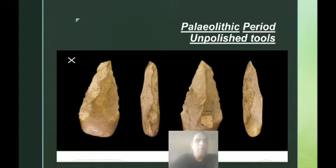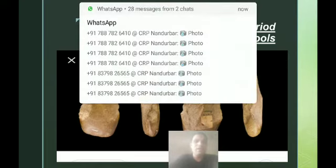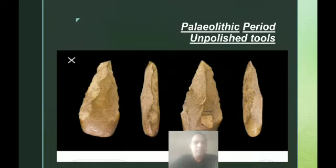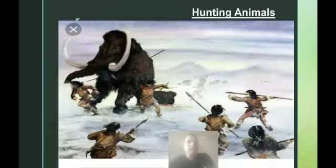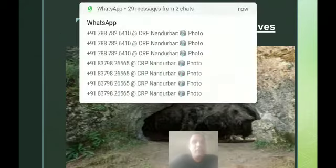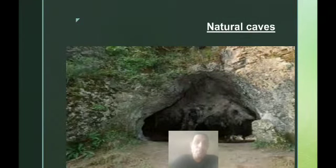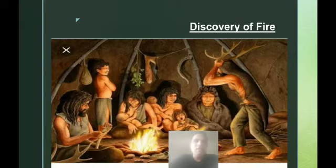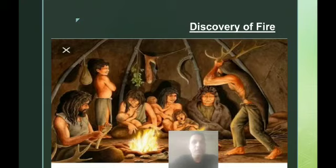The Paleolithic period means Old Stone Age and is the early phase of the Stone Age. The stone tools used by the people were big in size and unpolished. They hunted for their food and lived in natural caves for protection from rain, heat, and wind. They also discovered fire, which was very useful, and the technique of cooking developed during that time.